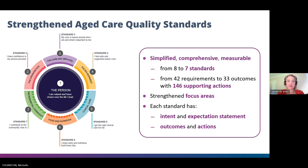The strengthened aged care quality standards will not apply to all registration categories — they will only apply to providers in specific registration categories. It is important to know that the standards apply to both home care and residential care services. The strengthened standards aim to be simplified, providing comprehensive and measurable standards — moving from eight to seven standards — with strengthened focus areas, and each standard has intent, expectation statements, and clear outcomes and actions.